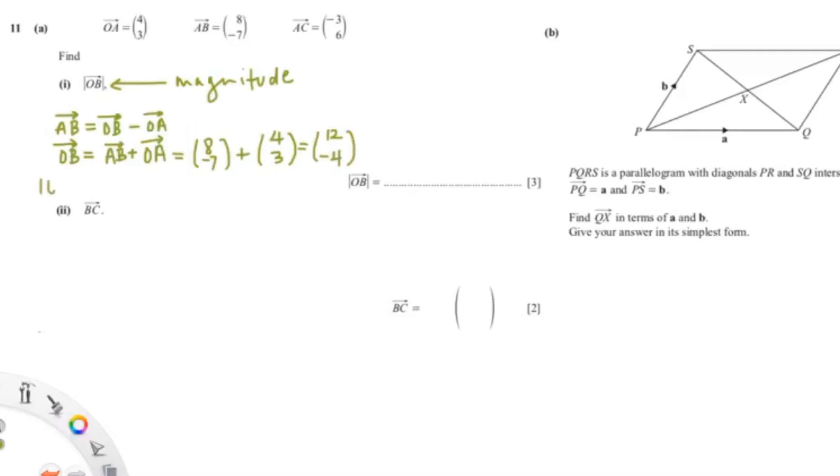So now that we've found the vector for OB, now we can find its magnitude. So it would be 12 squared plus negative 4 squared and the square root of all of that. Put those values into your calculator, giving you an answer of 12.6. So the magnitude for OB is 12.6.